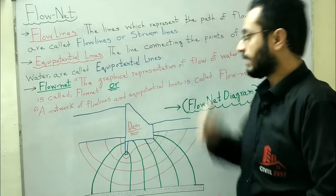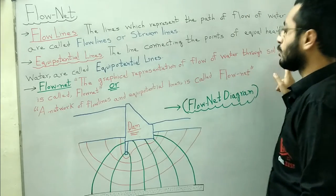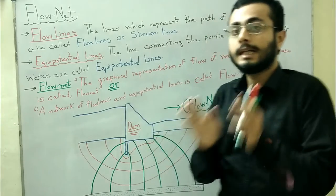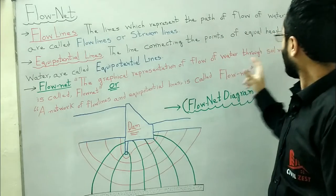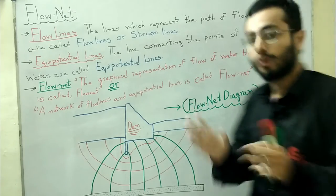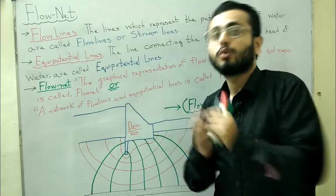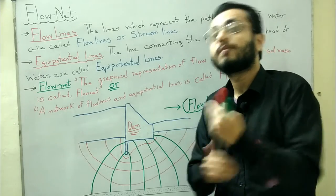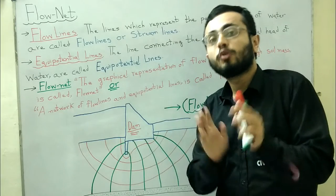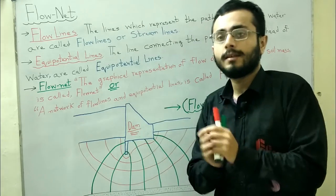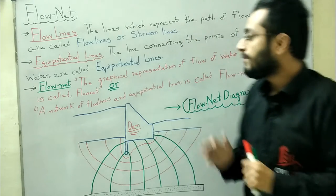The graphical representation of flow of water through soil mass is called flow net. It is the graphical representation of how water flows through soil mass. This process is known as seepage, and how we graphically represent the transportation of water through soil is known as flow net — basically a flow net diagram.